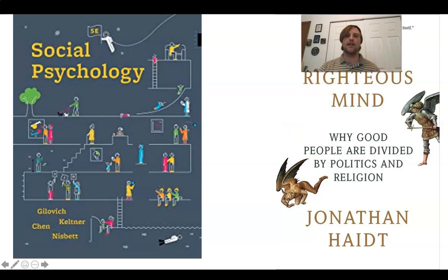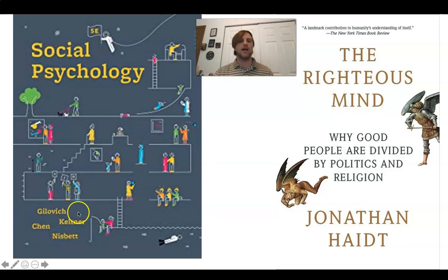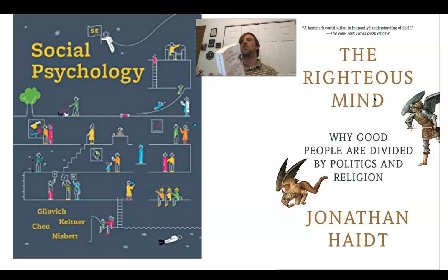In this class, you will be reading a couple of books. You've got the standard textbook written by some of the top social psychologists in the world. You've also got a shorter book — about 400 pages — called 'The Righteous Mind: Why Good People Are Divided by Politics and Religion.' That should be a very relevant reading for these times we're living in.